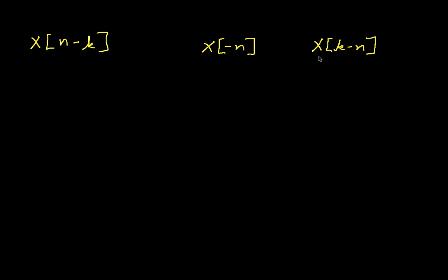And if we combine the two, where we have x of k minus n, where k is some known value, what this does is flip x and then shift it. We'll go through some examples that show how this works, and hopefully by the time we're done you'll have a feeling for how it works. If you're presented with situations we haven't talked about here, you'll know how to begin working with them and understand what the result is when signals are shifted or flipped.